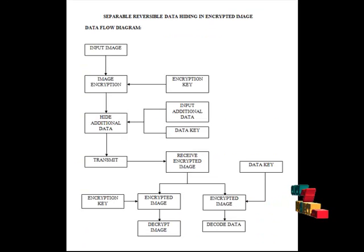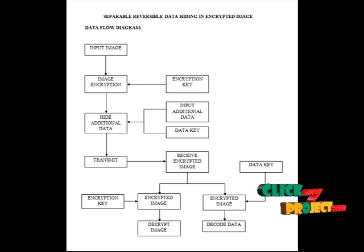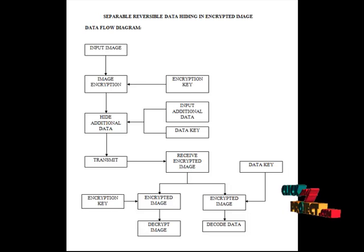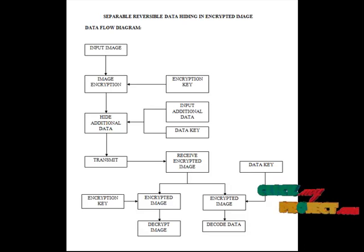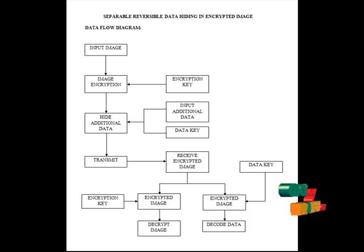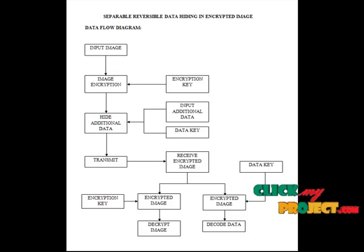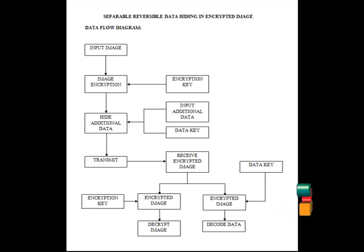This is the data flow diagram of our project. In the first step, we initialize the input image. This initialized image is further used for the image encryption process. In the encryption stage, we encrypt the given image by using an encryption key. Then this encrypted image is further used for the data hiding process, where the input image is compressed with additional data with the help of the data key, and then transmitted to the receiver side.